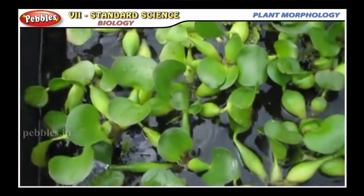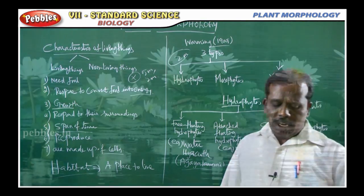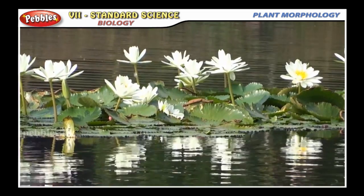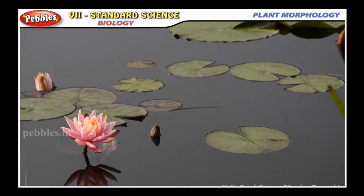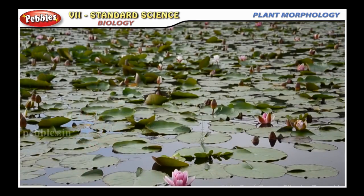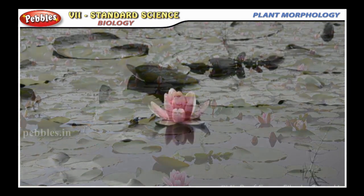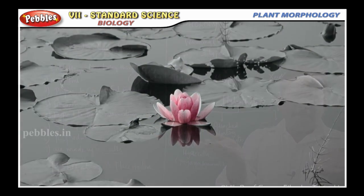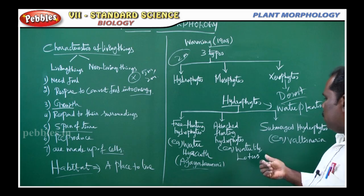Next, attached floating hydrophytes. Examples include water lily and lotus. These plants are fixed at the bottom of the pond, but their leaves and flowers float on the surface. This is the attached floating hydrophyte type.